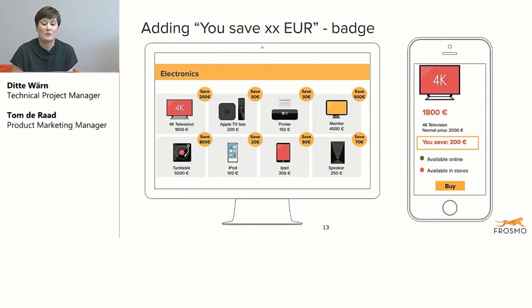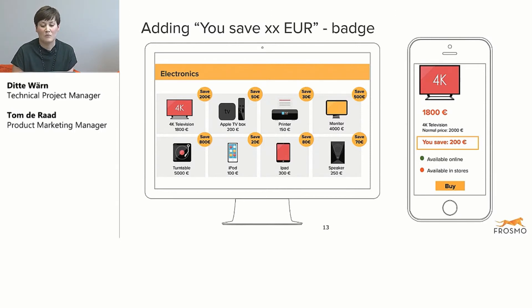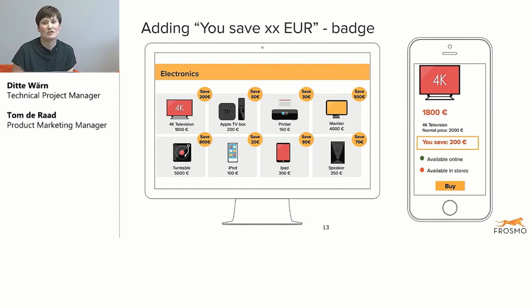Here's an example of a badge — basically showing how much savings you can have by having this badge on the category page. Quite often customers have market prices shown alongside their own price, so the visitor can see how much money they could save by buying from this provider.